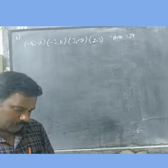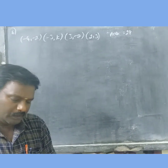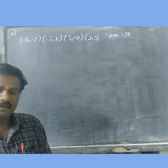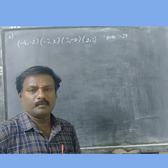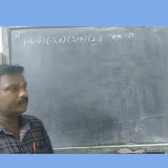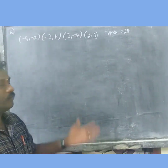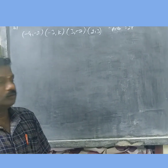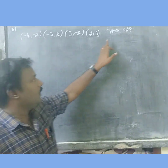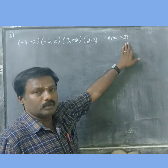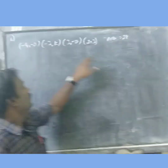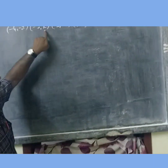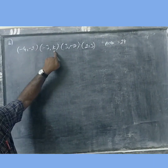Hello friends, we have Exercise 5.1, 10th standard class, 6th sum. We will see the area of a quadrilateral. We have to find the value of k.